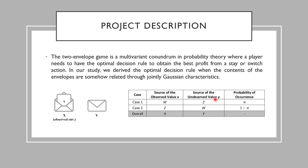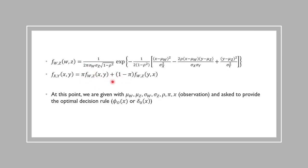Before diving into solution methodology, I should note that from this point on, we use random variables x and y, which represents the observed and unobserved envelopes respectively. The joint pdf of x and y can be found by using the joint pdf of omega and z such as shown here.